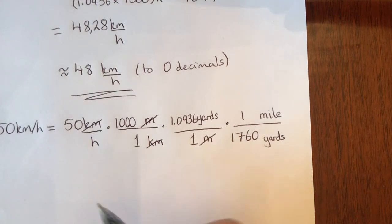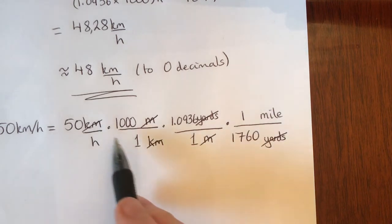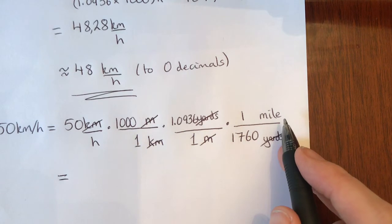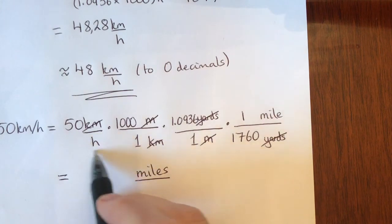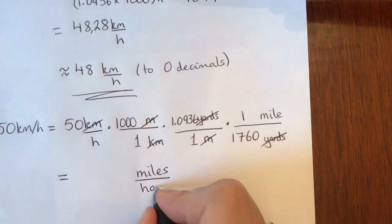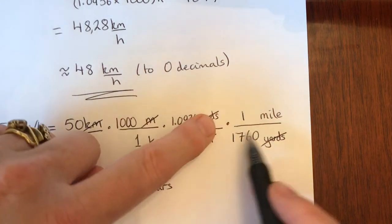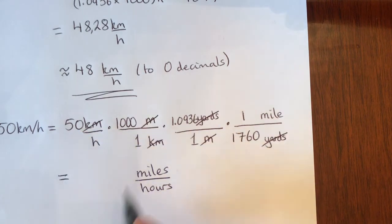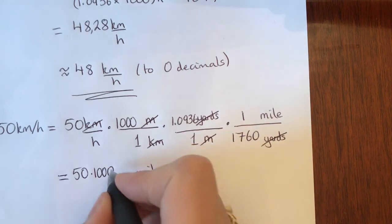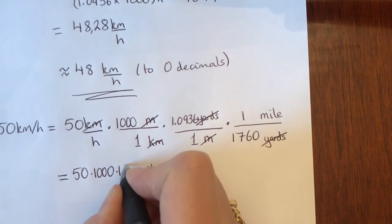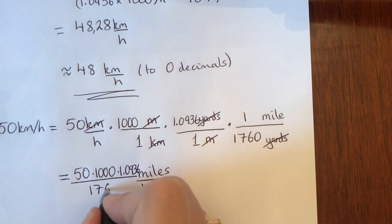Looking at our units: yards divided by yards is 1. On the top line we have miles and on the denominator we have hours, so the units are correct. Kilometers cancelled with kilometers, meters with meters, yards with yards. The numbers we have left are 50 multiplied by 1000, multiplied by 1.0936, all divided by 1760.